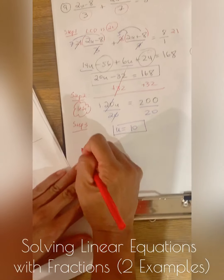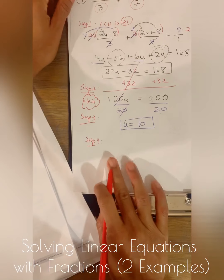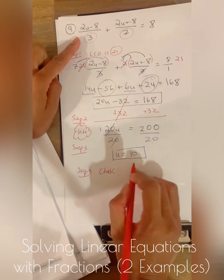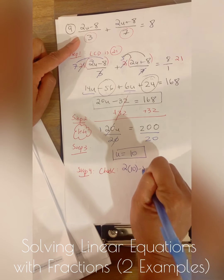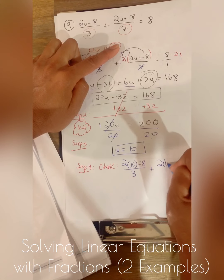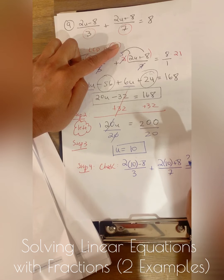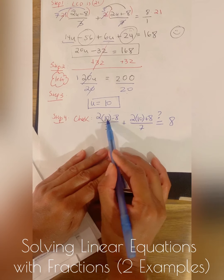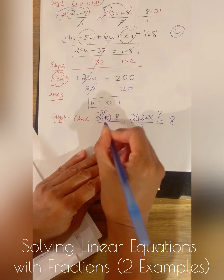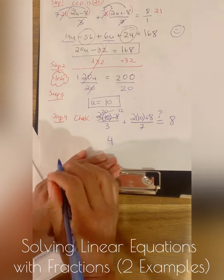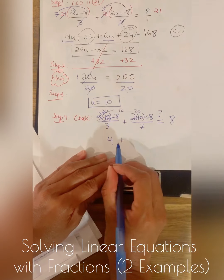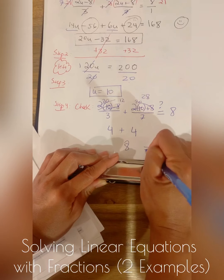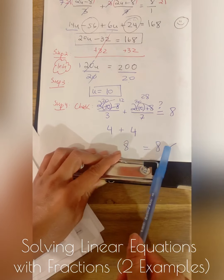Let me show you how to check the answer. Plug u = 10 into the original problem: (2 times 10 minus 8) divided by 3 plus (2 times 10 plus 8) divided by 7. Does this equal 8? We get (20 minus 8) divided by 3 = 12 divided by 3 = 4, plus (20 plus 8) divided by 7 = 28 divided by 7 = 4. Four plus four equals 8 — the left side equals the right side, so u = 10 is correct.